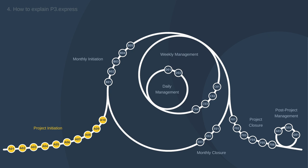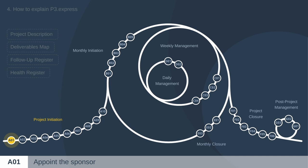The first thing done in project initiation is to appoint a sponsor — one executive in the company who can provide resources, make high-level decisions, and be the project manager's contact point with higher management. This is exactly like the executive in Prince2 or the sponsor in the PMBOK Guide. The concept of a sponsor is fundamental across most systems, yet many people still have trouble with it, perhaps because it's been the norm to expect the project manager to be accountable for everything.